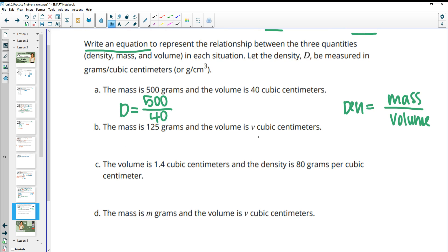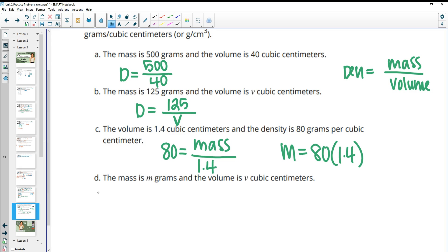Next one, the mass is 125 grams and the volume is V. So we still put the mass on top and we put the volume on bottom. This time the volume is just a letter or a variable V. Part C, the volume is 1.4 cubic centimeters and the density is 80 grams. So 80 is going to equal our mass divided by our volume, which they tell us as 1.4. The other thing you can think of is the opposite of dividing by the volume would be multiplying it. So another thing you could do here is say that the mass is going to be equal to 80 times 1.4. And then D, the mass is m grams. So the mass goes on top. The volume is V. That goes on the bottom. And that equals our density.